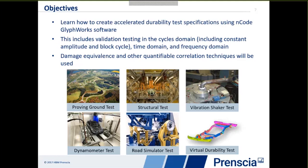We have a number of different types of validation tests to cover. We have two types in the cycles domain, one type in the time domain, and one more in the frequency domain. All of them will be looking at damage equivalents — we're going to take measured test data, determine damage, and come up with validation tests that have equivalent damage, following known fatigue rules like stress life and strain life methodologies.